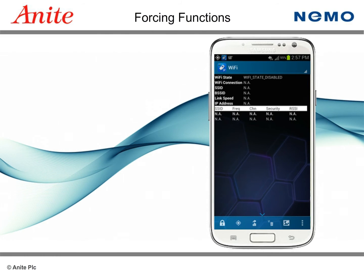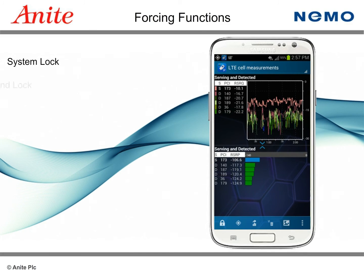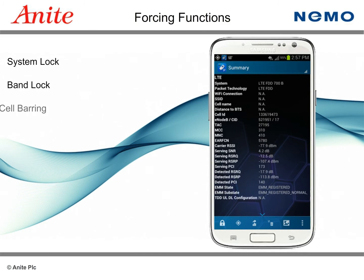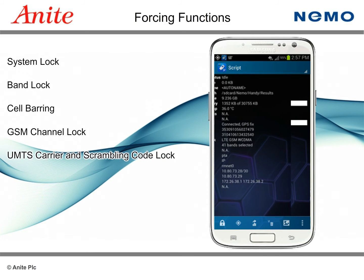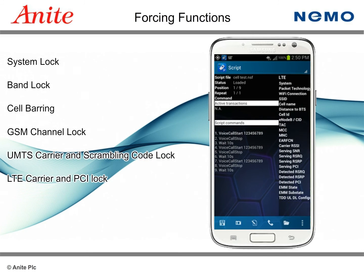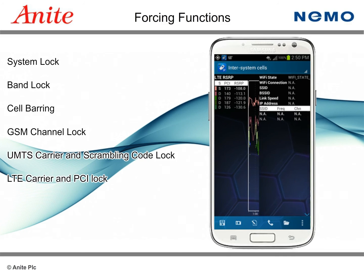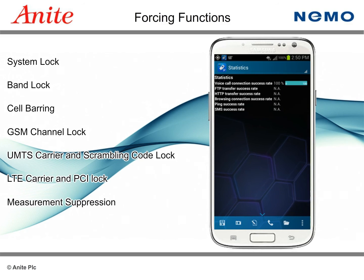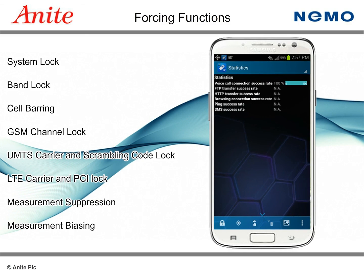Additionally, NEMO Handy supports advanced forcing features including system lock, band lock, cell barring, GSM channel lock, UMTS carrier and scrambling code lock, and LTE carrier and PCI lock. Furthermore, it is possible to control handovers using measurement suppression to prevent handovers, or measurement biasing to assist handovers to a specific sector.